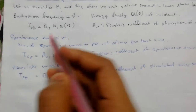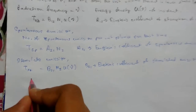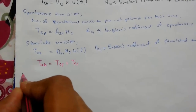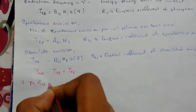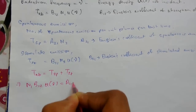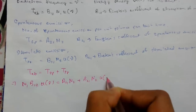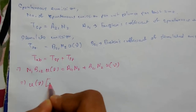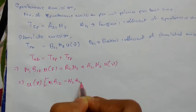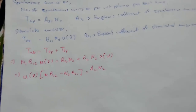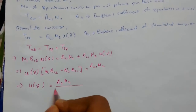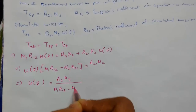This process continues until thermal equilibrium is reached, at which point the rate of upward transition equals the rate of downward transition. So we can write: T_AB = T_SP + T_ST, which gives us: B12 * n1 * u(mu) = A21 * n2 + B21 * n2 * u(mu). Rearranging to express energy density, we get: u(mu) = A21 * n2 / (n1 * B12 - n2 * B21).